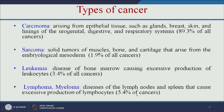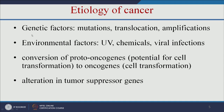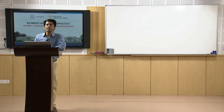Let us see what is the reason for cancer. The first reason is genetic factors — it may be due to mutations, translocation, or hereditary causes. The next reason is environmental factors like UV radiation, chemicals, or viral infections. If a person is working in a chemical industry, they have a high chance of getting cancer.